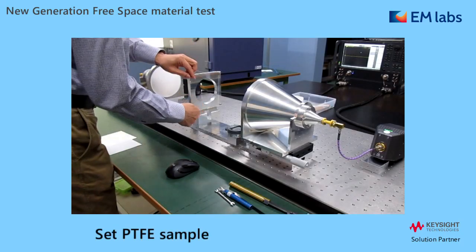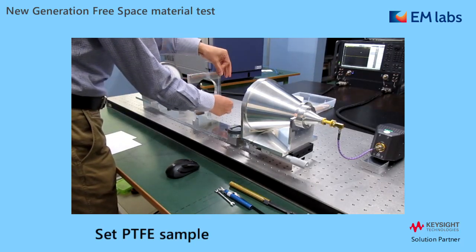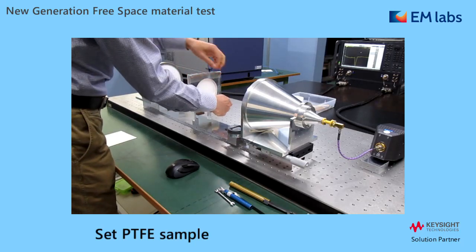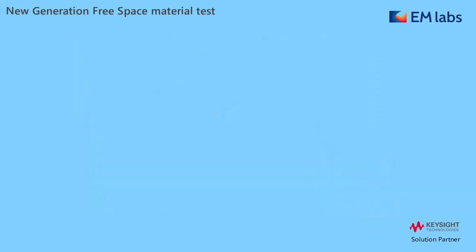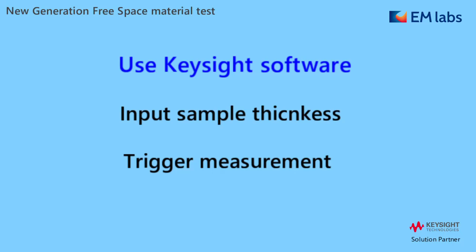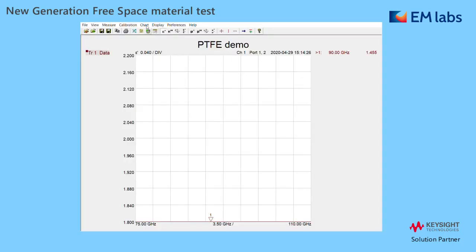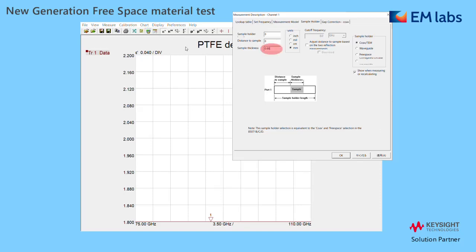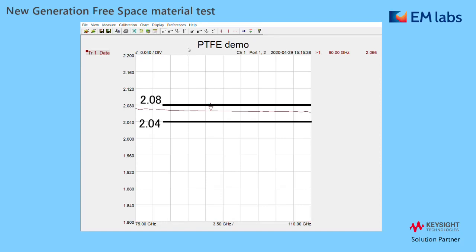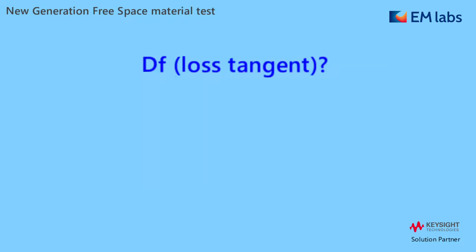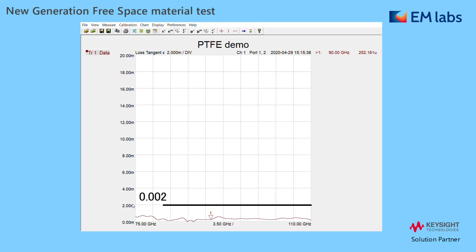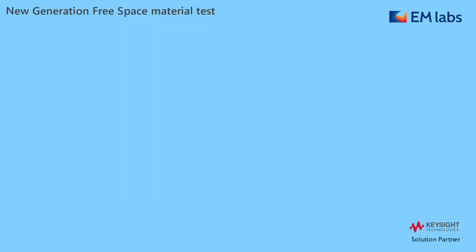Now we're ready to measure PTFE. First, set the sample. As we already calibrated the system, we just insert the sample into the holder — that's all. From here, we only use the Keysight material test software. You simply input the sample thickness — 0.98 mm — and trigger the measurement to get the results. The DK result is 2.06, as expected. For DF, it's nearly zero; if you set the scale properly, you can confirm it's less than 0.002. Much more precise evaluation is now available with our free space solution.